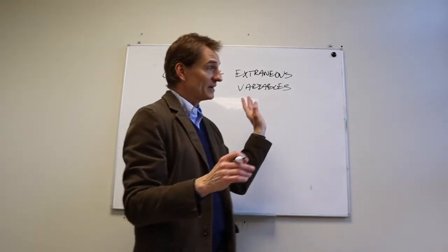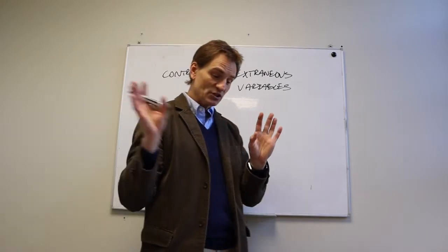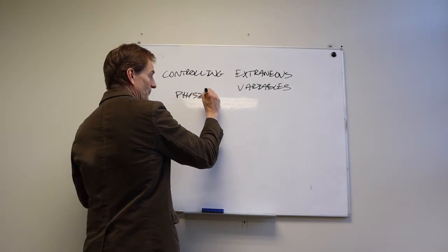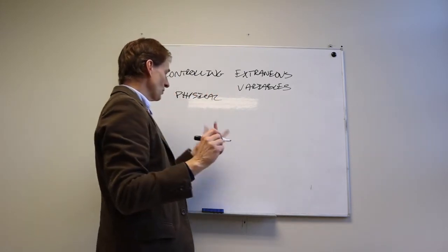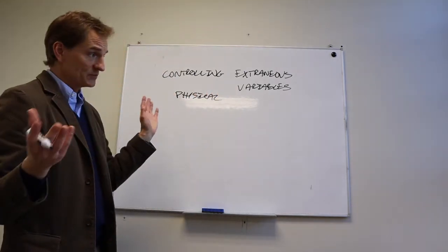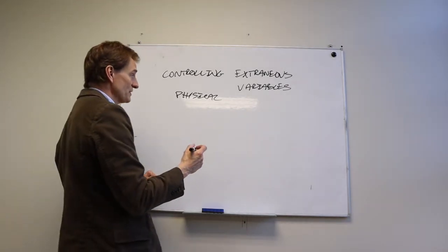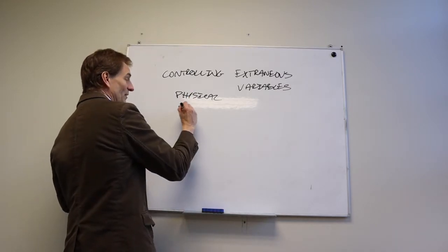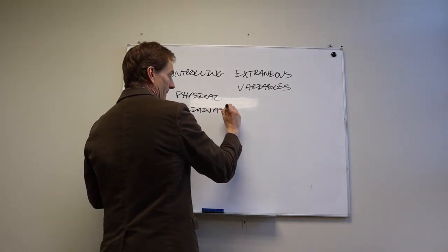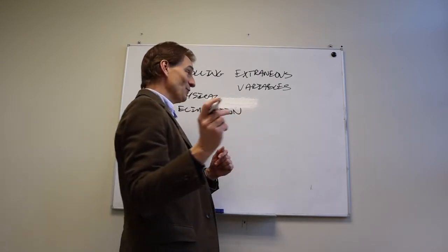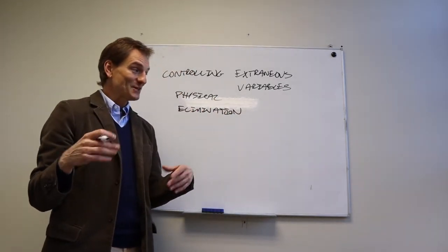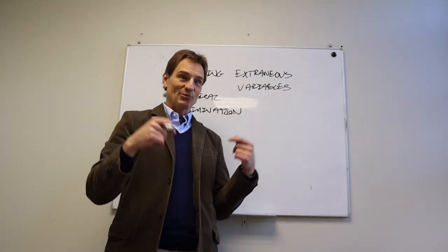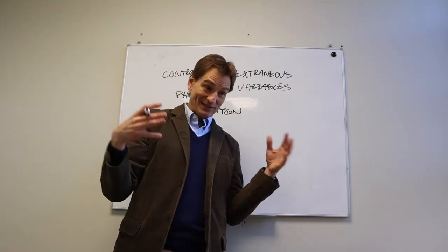So there's a lot of different extraneous variables. Let's just talk about how we deal with physical variables first. And this would work within subjects designs or between subjects designs. The first way we can deal with them is through elimination. And this is exactly what it sounds like. If there's a problem, get rid of it. If you need a soundproof room, then run your research in a soundproof room or soundproof the room.